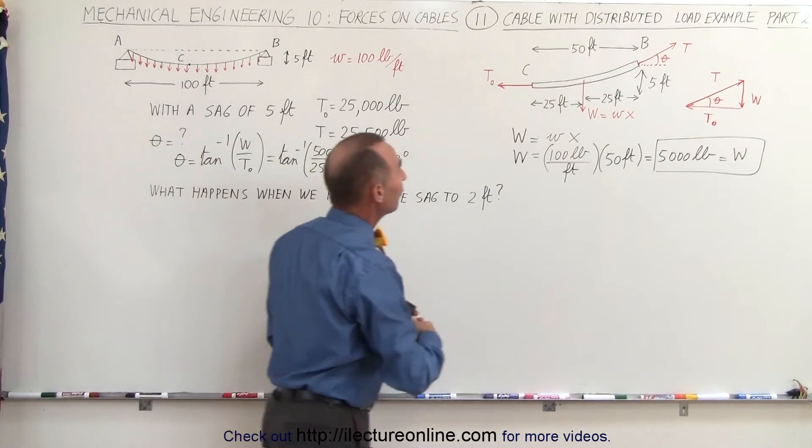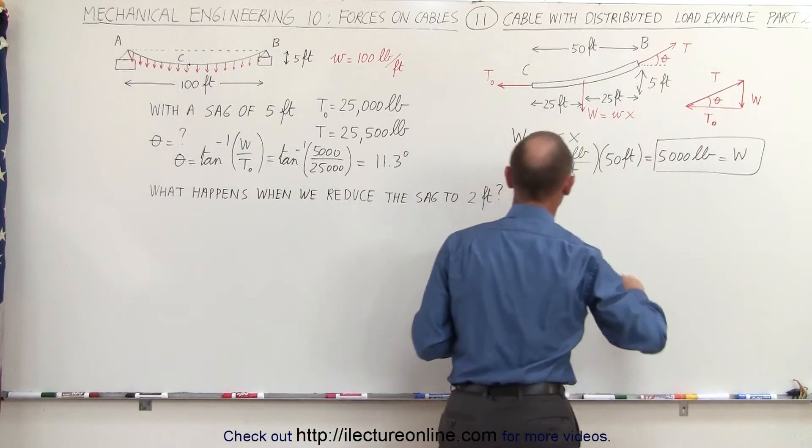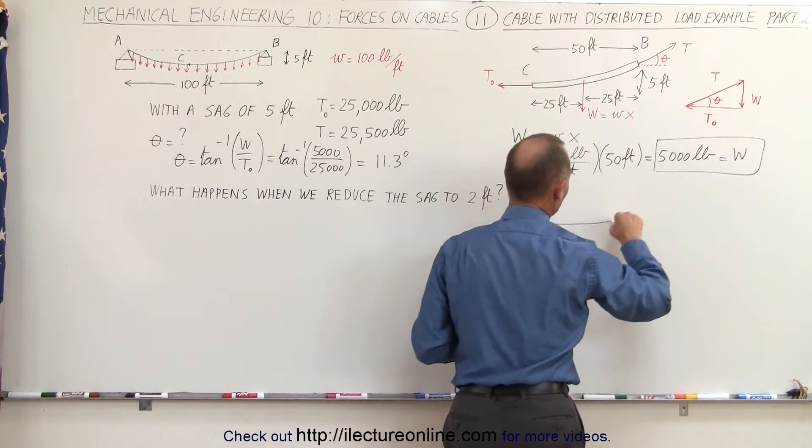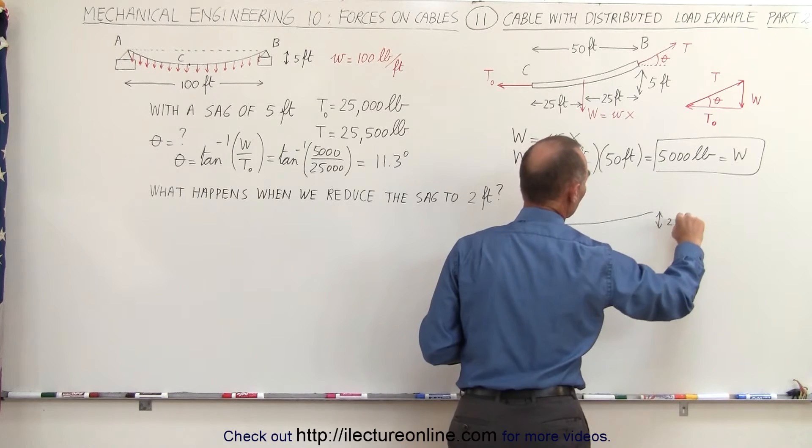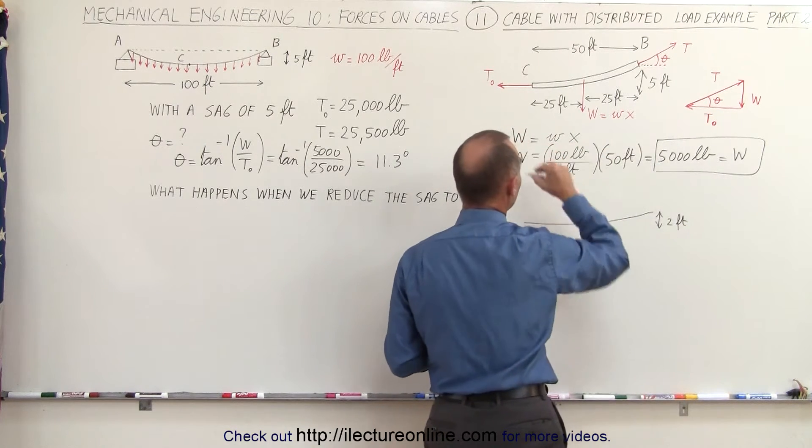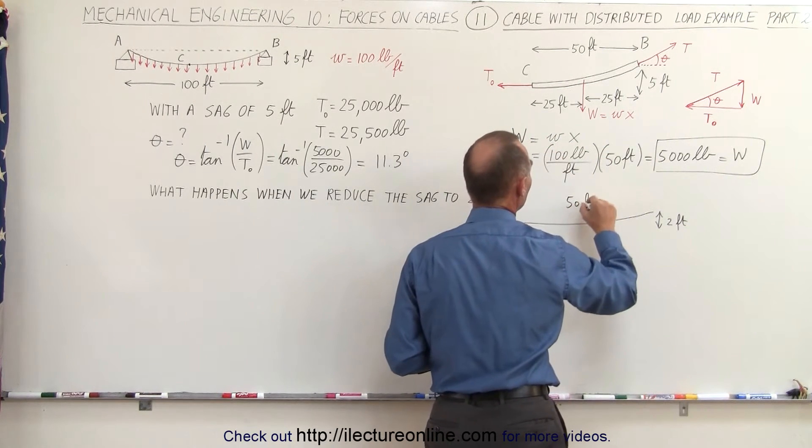But what happens now when we reduce the sag to two feet? So instead of having five feet there, we now have a cable that has a lot more tension on it in such a way that the sag now is reduced to two feet, and that section of cable still has a length of 50 feet.